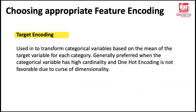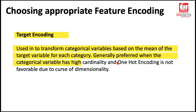Moving to the last encoding we're going to cover: target encoding. It is used to transform a categorical variable based on the mean or some central tendency of the target variable — the dependent variable or the label. It is generally preferred when the categorical variable has very high cardinality, meaning there are too many categories. In such cases, we prefer to apply target encoding.